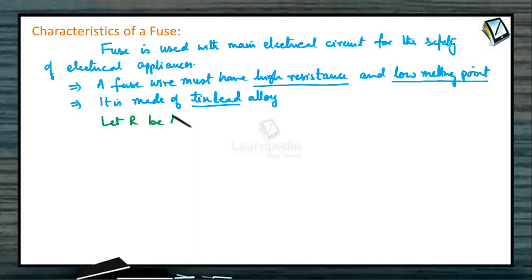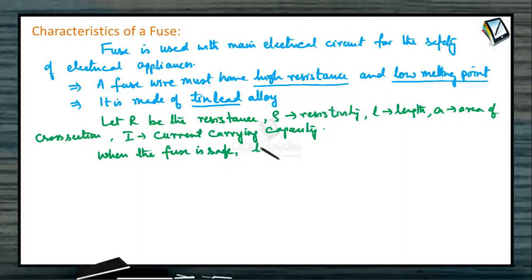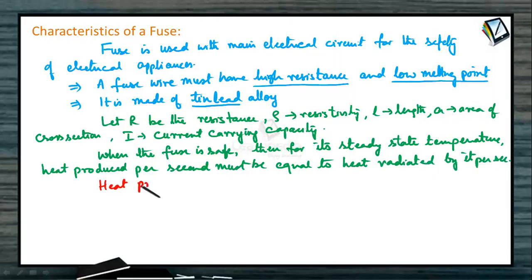Let R be the resistance, ρ resistivity, L length of the wire, A area of cross section, I current carrying capacity. When the fuse is safe, then for its steady state temperature, heat produced per second must be equal to heat radiated by it per second.